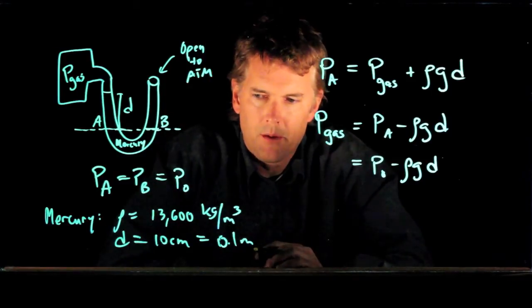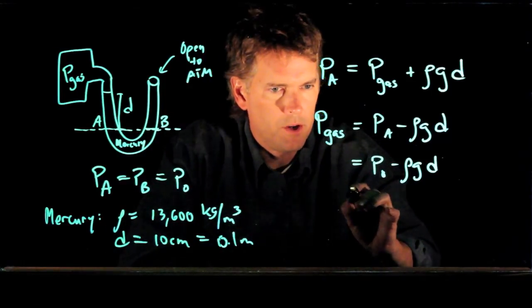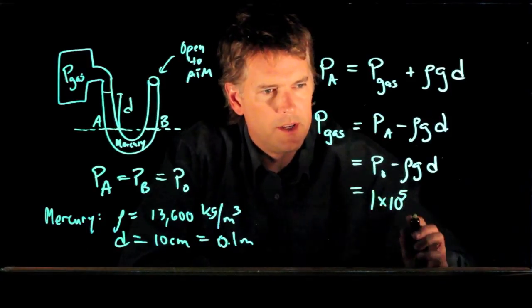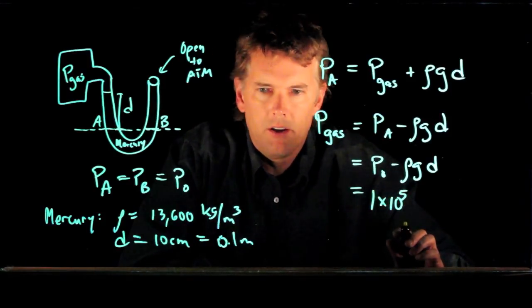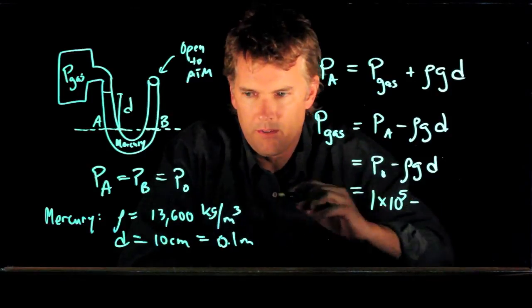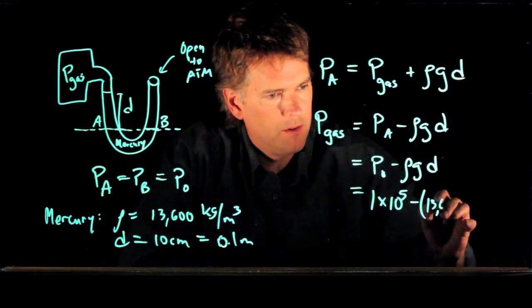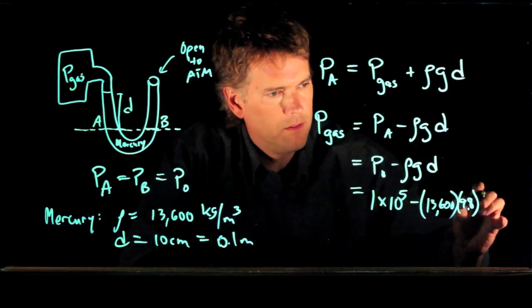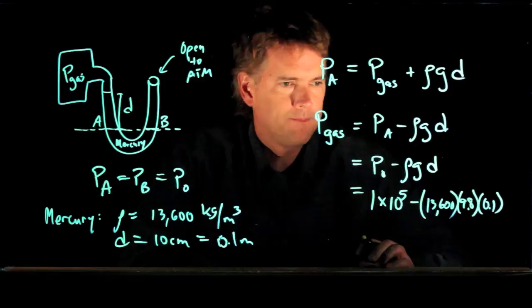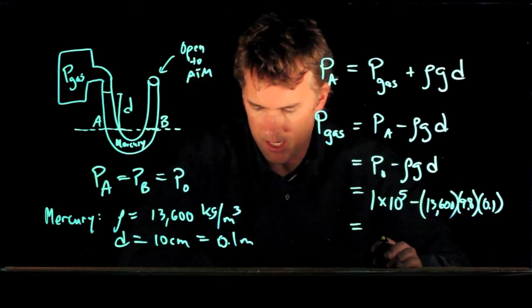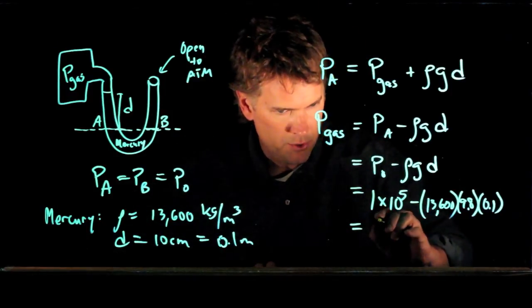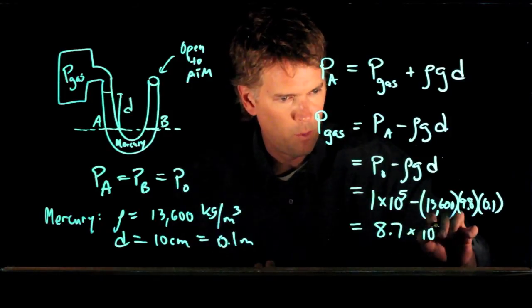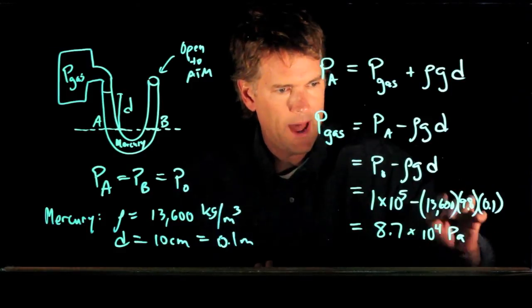And now we should have everything that we need to plug into this equation. P naught is 1 atmosphere. 1 atmosphere is 1 times 10 to the 5 pascals. Rho we just said was 13,600. G is of course 9.8. D is 0.1. And now you can plug in all these numbers. And in SI units, you should get around 8.7 times 10 to the 4 pascals.